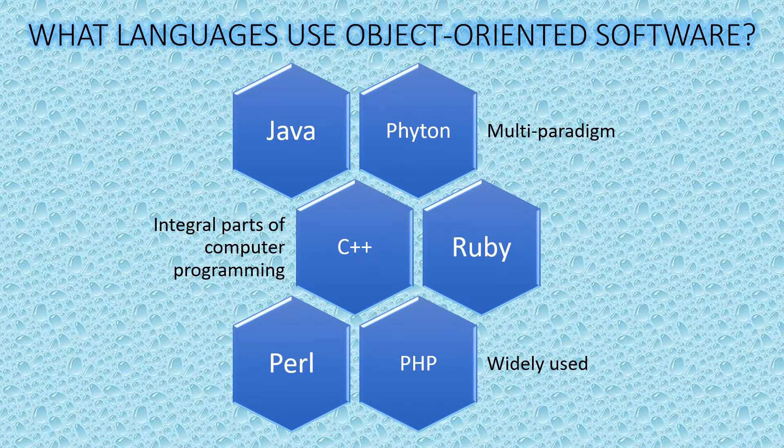What languages use Object Oriented Software? There are several Object Oriented Languages that are widely used within software development. These include Java, C++, Ruby, Python, and PHP.